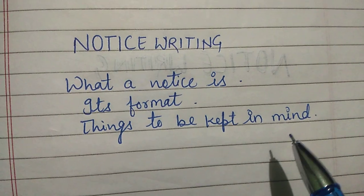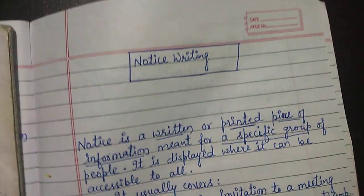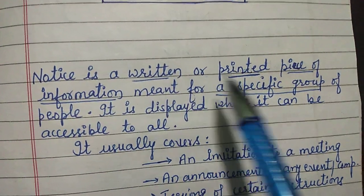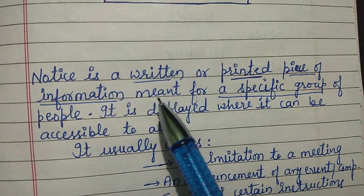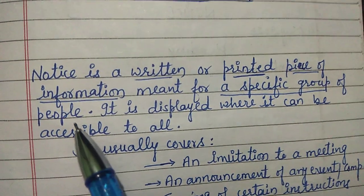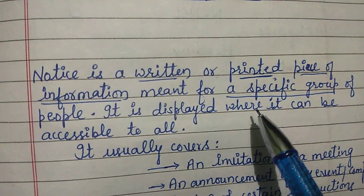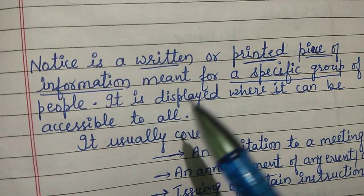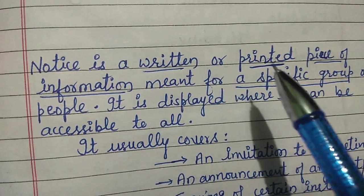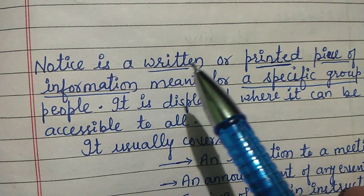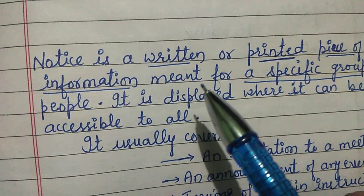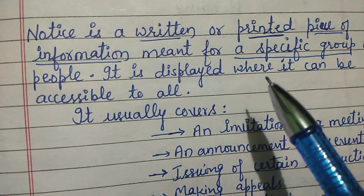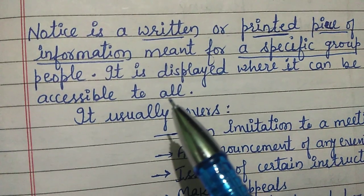Let us learn what a notice is. Notice writing: a notice is a written or printed piece of information meant for a specific group of people. It is displayed where it can be accessible to all. So a notice contains information in written or printed form, meant for a specific group of people, and displayed on the notice board where it can be seen by everybody.